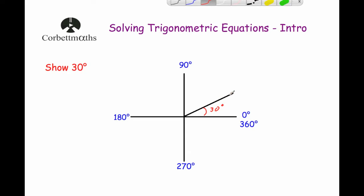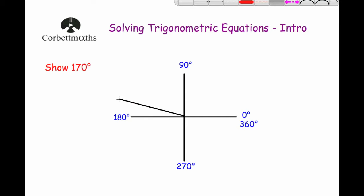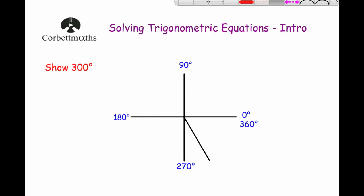Our next example is to show 170 degrees on the CAST Diagram. 170 degrees would start at zero and go around to here, so as a sketch it would look something like that. And our next example is to show 300 degrees on the CAST Diagram. Starting at zero, going around to 300 degrees — that's 30 degrees beyond the 270 mark. Remember, these are just sketches, and we mark in our 300 degree angle like so.